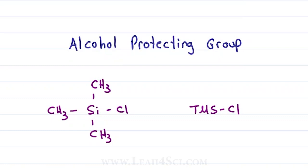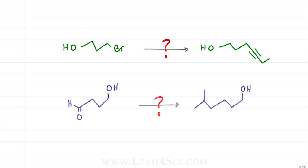In this Lea4Sci video, we'll look at the TMS alcohol protecting group including the reaction and mechanism. Say you're looking to carry out this chain elongation with an alkyne in the product or this elongation where we also turn the aldehyde into an alcohol. It seems straightforward enough. For the first reaction, we simply add this alkyne for an SN2 reaction and here we just add a Grignard followed by acid, right?